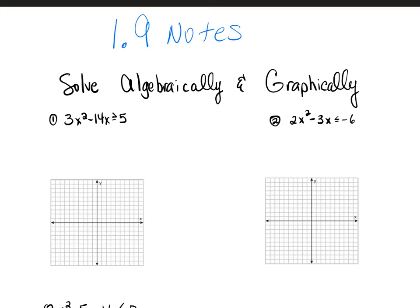Section 1.9 goes over solving polynomial inequalities algebraically and graphically. We're going to treat this the same exact way that we have been doing them, except now we're graphing them. When we graph an inequality or an equation that has an x squared on it, it's a parabola — it looks like a U. You have to make sure you pay attention to whether or not that U opens upward or opens downward. If it opens up, that 'a' value is going to be positive. If it opens down, it's going to be negative.